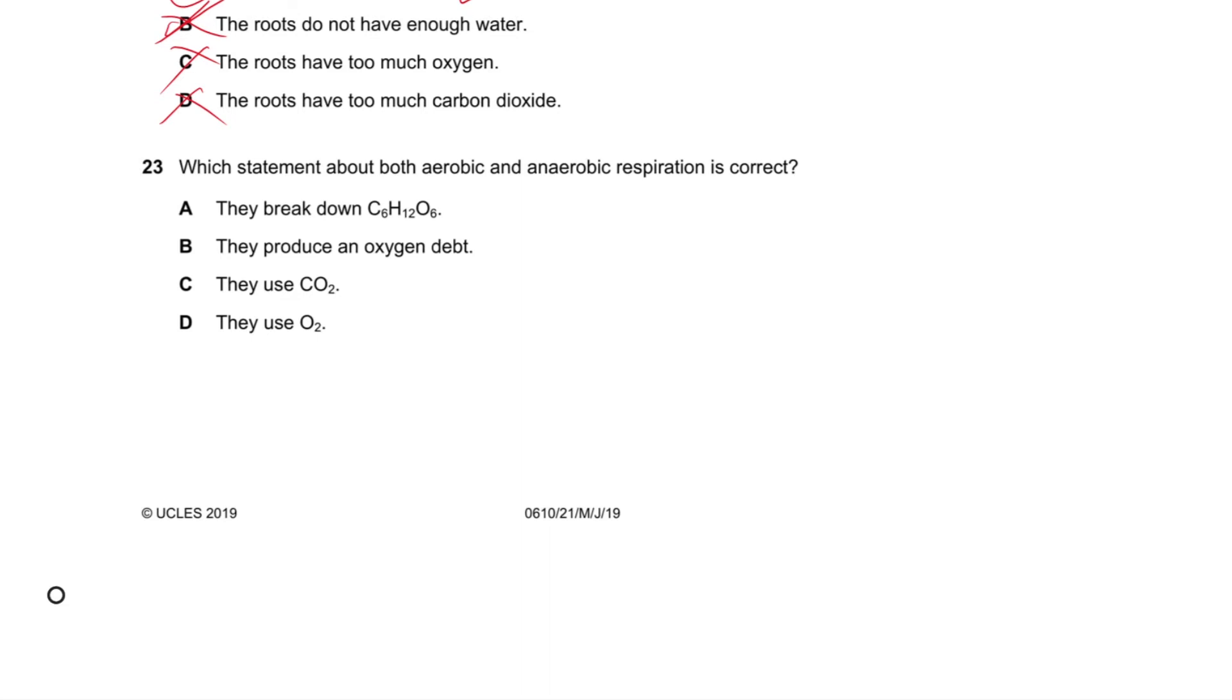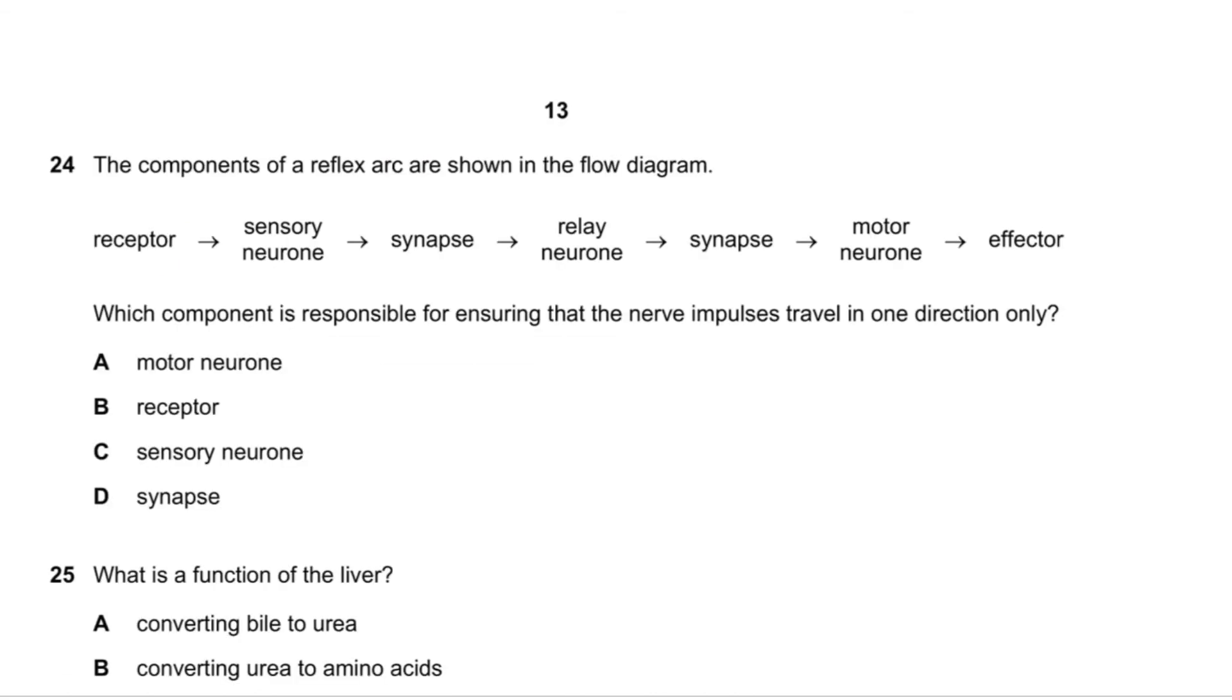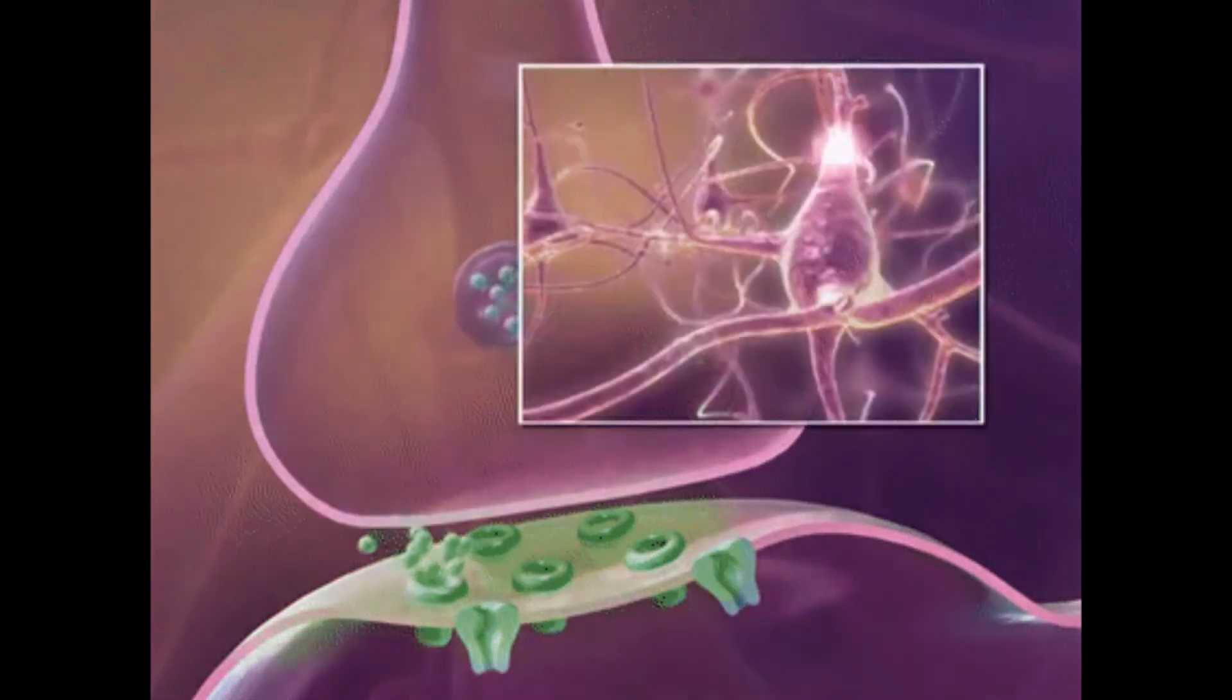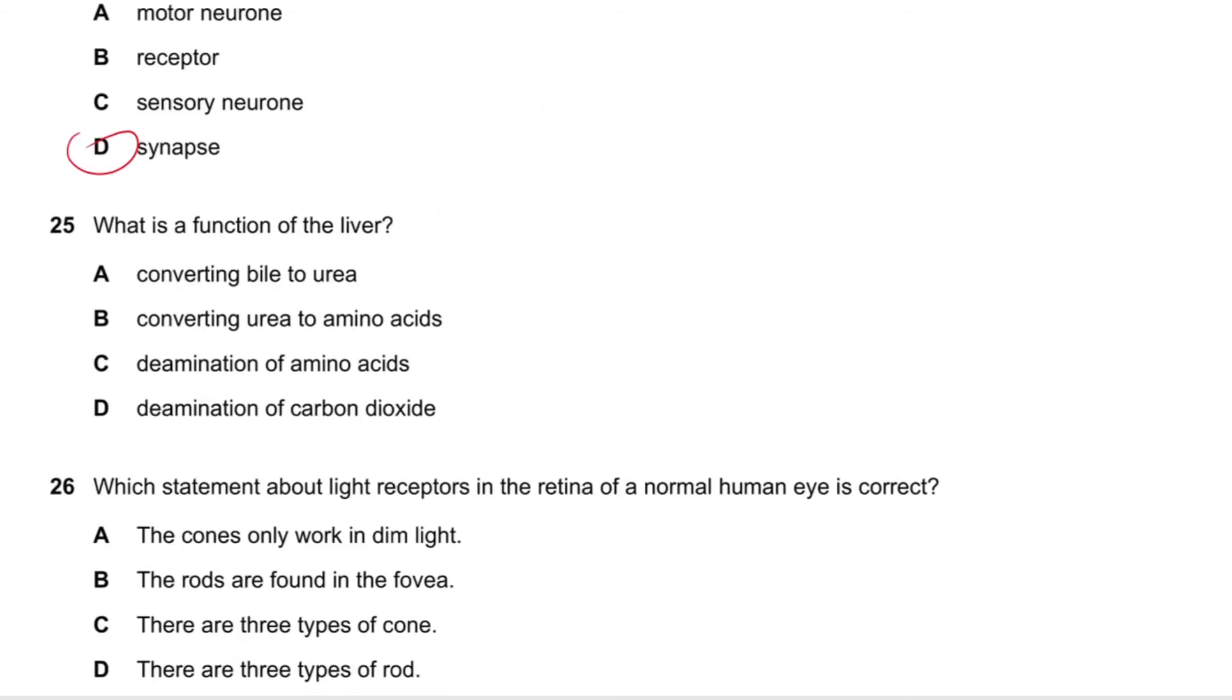Question number 23 says which statement about both aerobic and anaerobic respiration is correct? They both release energy, yes. They both occur in mitochondria? No, that's only aerobic. They use carbon dioxide? They don't use it, only aerobic produces it. They use oxygen? No, anaerobic means no oxygen. Answer is A. Question number 24 says the components of a reflex are as shown in the flow diagram. Which component is responsible for ensuring that nerve impulses travel in one direction only? The synapse. This is kind of like a function thing that you have to know.